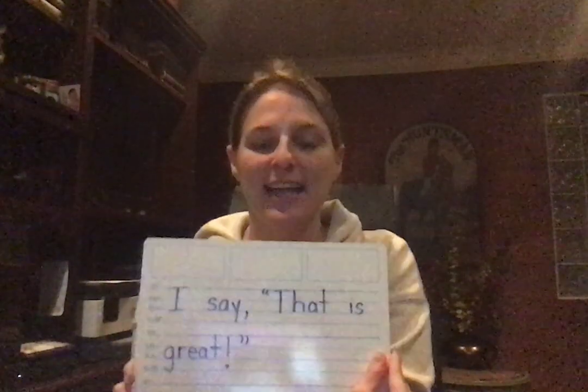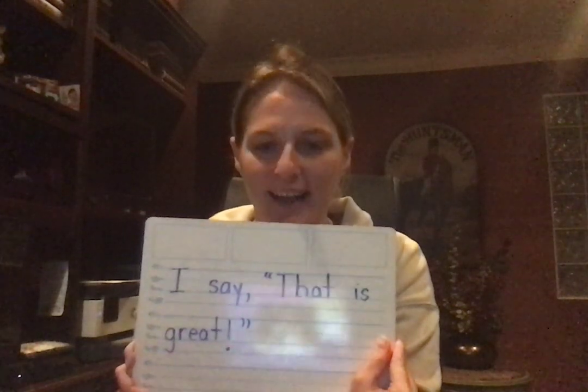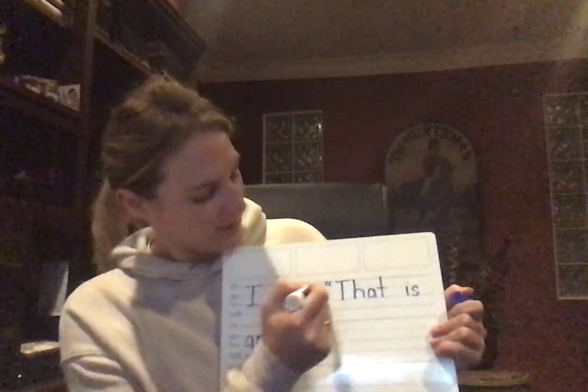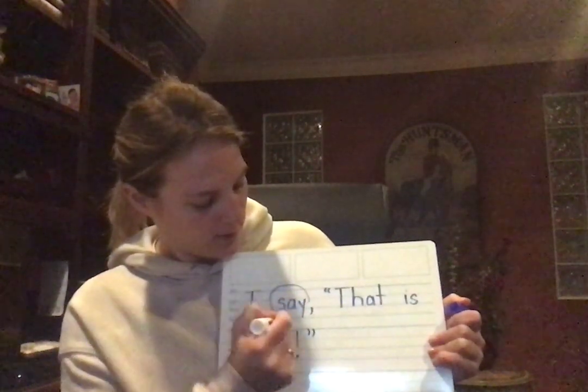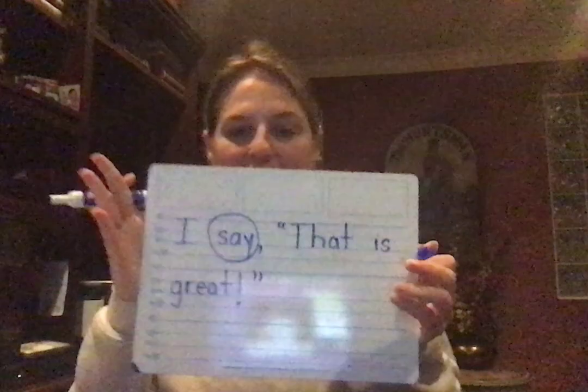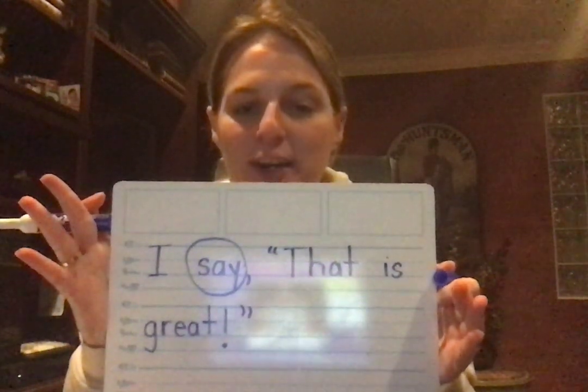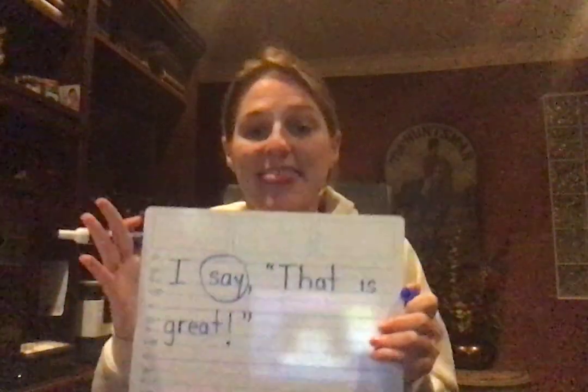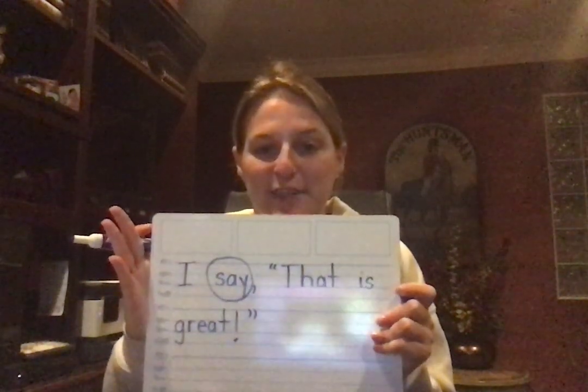I'm going to say a sentence and I want you to echo that sentence. I say, 'That is great.' Did you echo my sentence? So now here's the sentence — I say, 'That is great.' I'm going to circle a word in this sentence and let's see if you can tell me which word I circled. That's right — I circled the word 'say.' That is our new sight word for today.